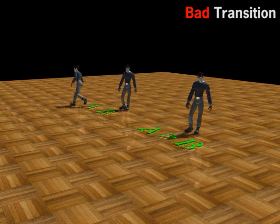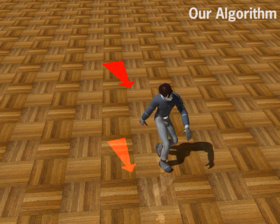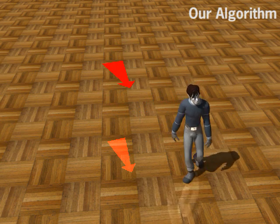We introduce an oracle that learns to predict the goodness of a combined deformation and transition. The oracle checks whether the motion looks like a realistic response to a push from the specified direction. This is an example motion synthesized using our algorithm consulting the oracle.